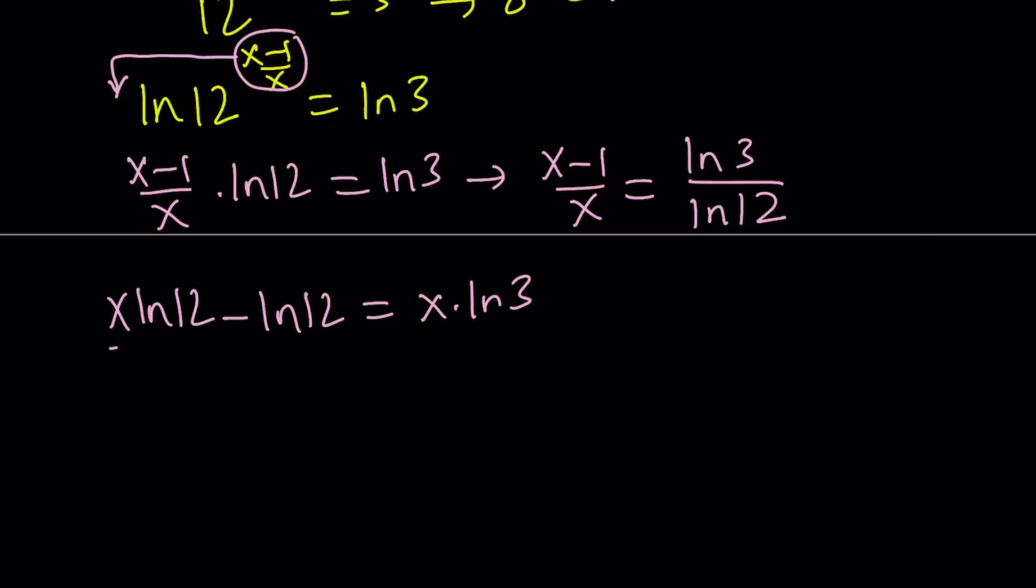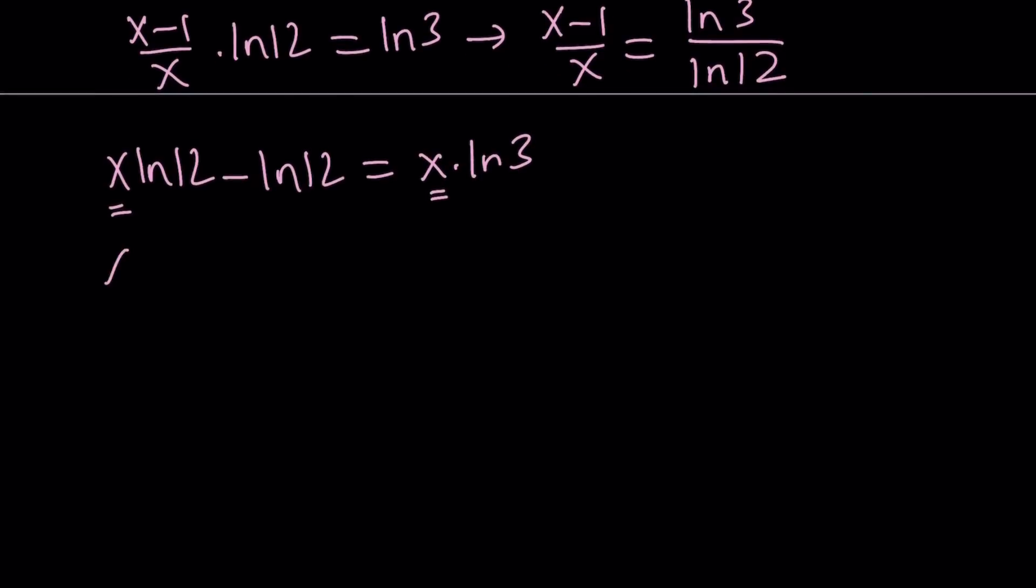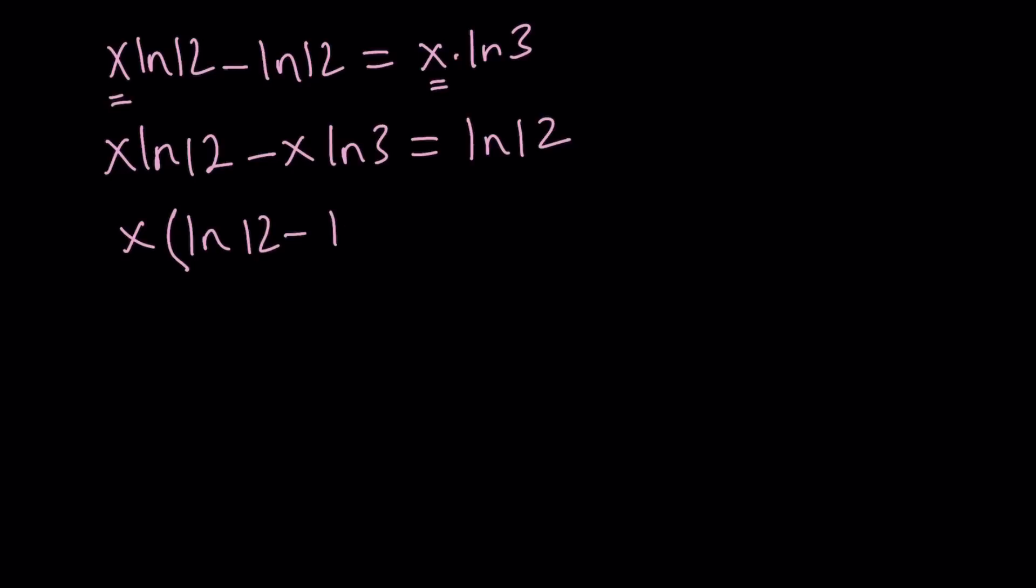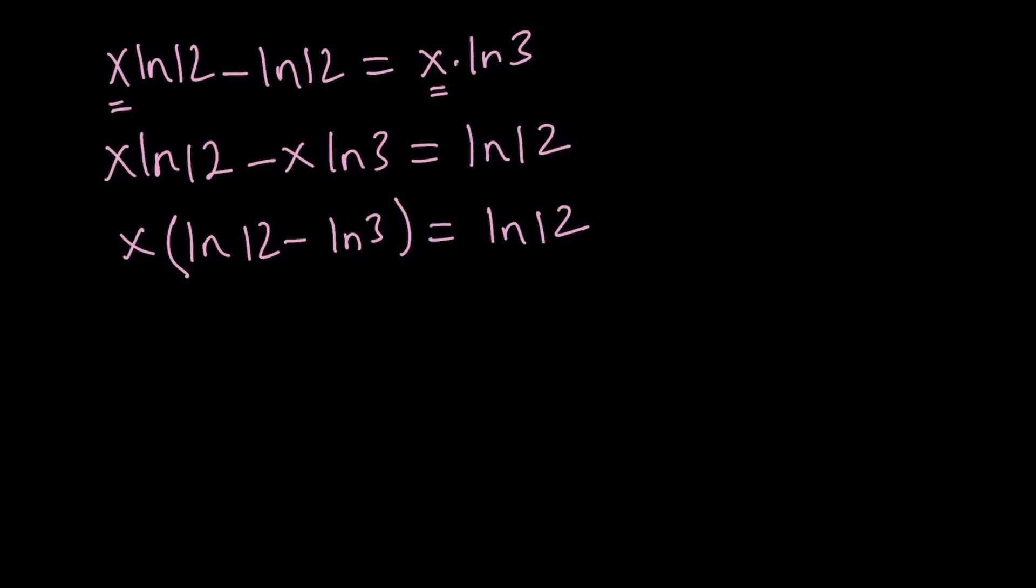Now since these terms both have x in them, let's put them on the same side because we're going to factor. x ln 12 minus x ln 3 equals ln 12. We can factor out x and write it this way. Now we divide both sides by ln 12 minus ln 3, but we can use properties of logs one more time. ln A minus ln B turns into the ln of a quotient. So ln 12 minus ln 3 can be written as ln 4, which is nice for our purposes.